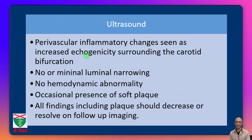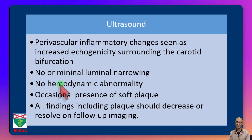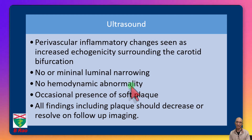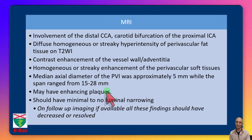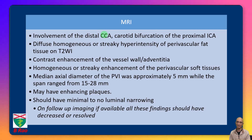On ultrasound, we can see perivascular inflammatory changes surrounding the carotid bifurcation with minimal or no luminal narrowing and no hemodynamic abnormality. Occasionally we can have a soft plaque, as we saw in our patient. These imaging findings should improve on follow-up. Involvement can include the distal common carotid artery, carotid bifurcation, or proximal ICA, which will show STIR hyperintensity.